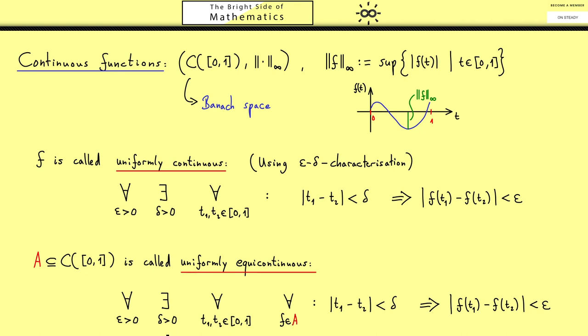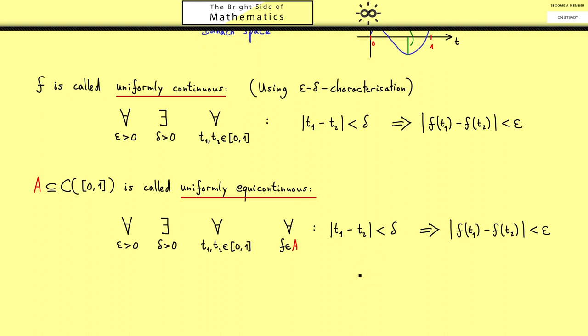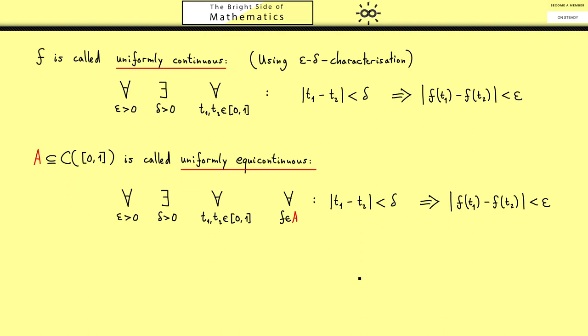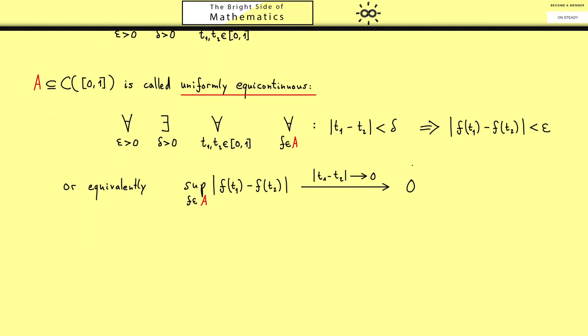Therefore I put the quantifier for all f in A after the delta quantifier. In other words this means we can choose the delta independently of the function f and this still holds. And this property for the whole set A we call equicontinuous. Now after understanding where the long formula with the quantifiers comes from we can simplify this into a shorter formula. Going through all the f here is of course equivalent to saying that the supremum over f of this number is less than epsilon. And the epsilon delta gadget we used before can be translated into a limit process. This means the supremum has to go to zero if the distance between t1 and t2 goes to zero.